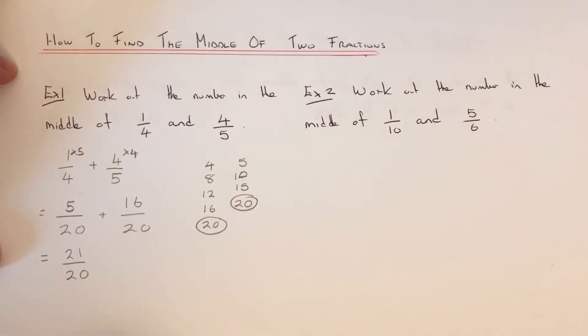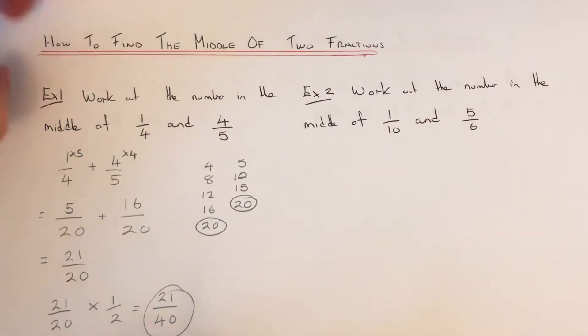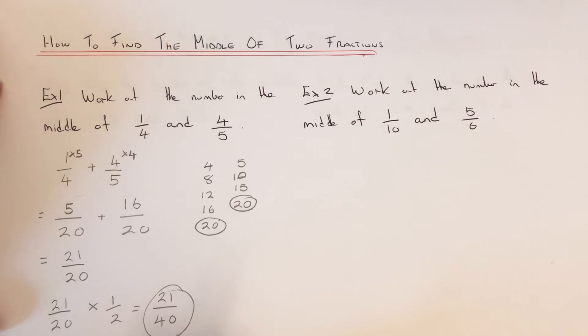So all we need to do now is half this fraction. We can do this by multiplying our fraction by a half, and that will give us twenty-one over forty. And that's the fraction in the middle of those two. You could do this on your calculator if your calculator is allowed. It will be a lot easier if you have your calculator.